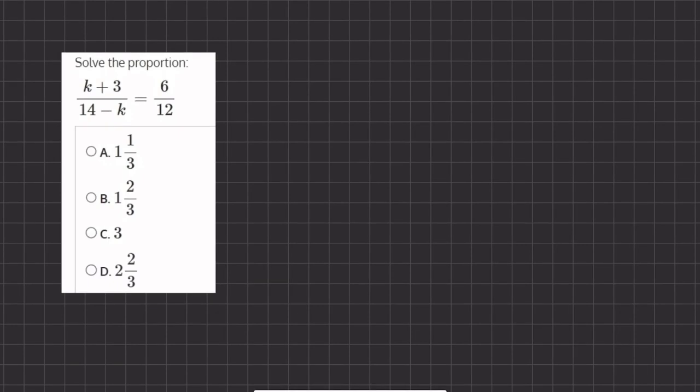When we have two fractions that are equal to one another, we can cross multiply. That means we can multiply the 12 to these terms, and the 6 to these terms.